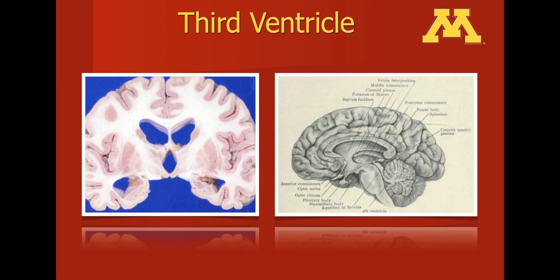I'd like to direct your attention to the image on the right-hand side of your screen. This is a sagittal view of the brain with the third ventricle in the middle. It is important to understand the anatomic relationship of the anterior commissure, the optic nerve and optic chiasm, the pituitary body, and also the mammillary bodies. When performing a third ventriculostomy for hydrocephalus, a hole is made anterior to the mammillary bodies and posterior to the pituitary body. Appreciate in this view how inferior to the third ventricle there is a potential space in front of the brain stem, as this is important when discussing the danger of injuring the basilar artery, which courses along the front part of the brain stem.